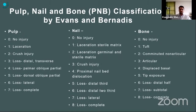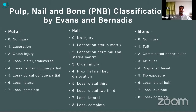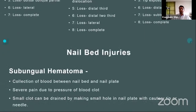In the Evans classification, for pulp injury it ranges from simple laceration to crush injury, with Type 3 being loss of the distal portion and Type 7 being complete loss of the pulp. Similarly for the nail, from simple laceration to crush injury with complete loss of the nail bed. For bone injury: fracture of the tuft of the distal phalanx, then comminuted fracture, and total loss of the distal phalanx. This classification gives a detailed idea and the surgeon should be aware of it.